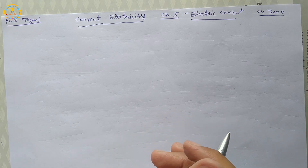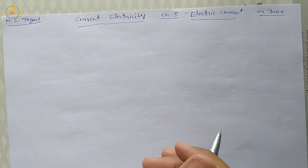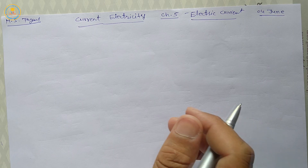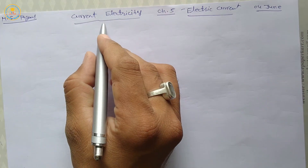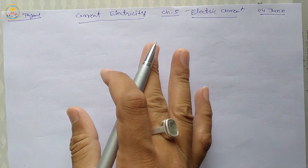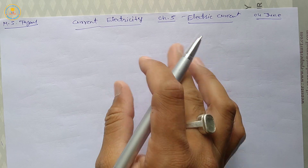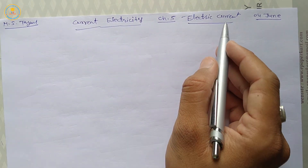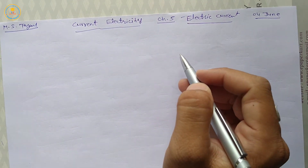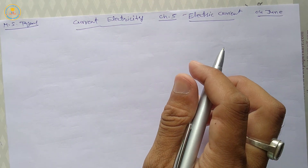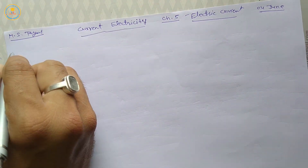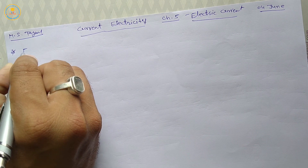Good morning my dear students. Today we start a new unit which is current electricity, and in this unit a new chapter which is electric current. So we start with electric current — first, the definition of electric current.